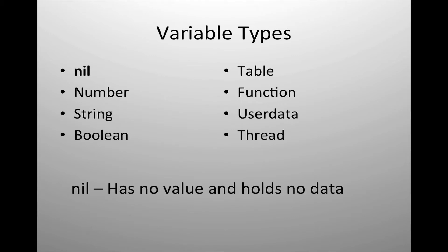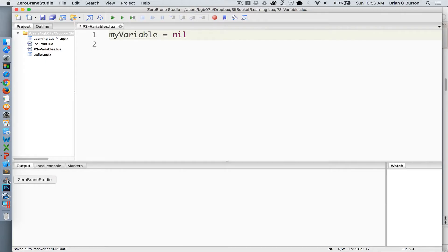Nil is the default variable type in Lua. All variables, when they are created until they are given a value, are by default a nil value. Nil is also used to clear variables or make them available for garbage collection to free up memory. So if you're done using a variable inside a programming project, you can set it to nil to remove it from memory.